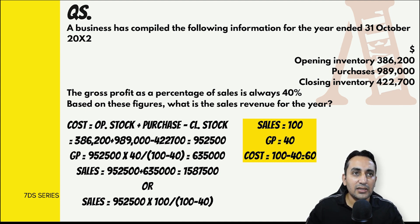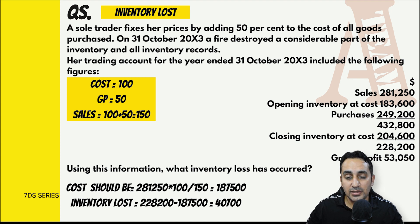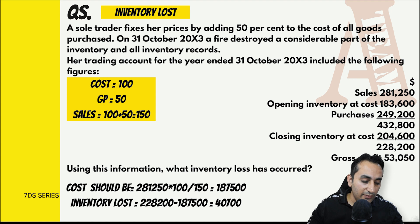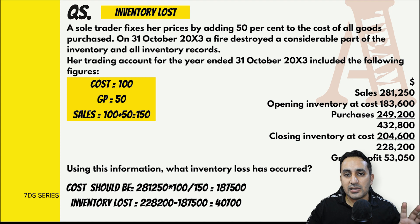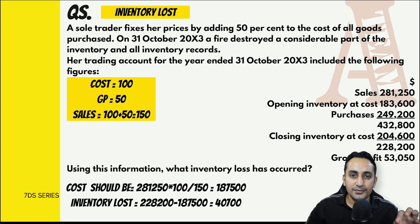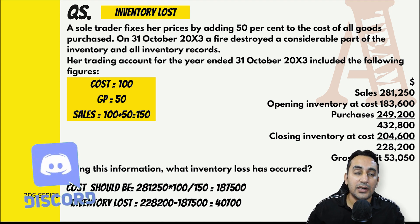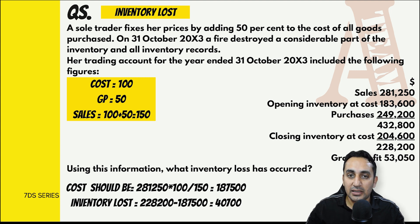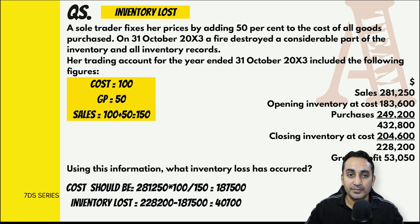अगले question में 31st October X3 को आग लगी है और inventory destroy हुई है - inventory lost कितनी हुई यह निकालना है। Inventory lost होने के बाद trading account से information निकाल कर दी है जिसमें sales, cost of goods sold और gross profit 53,050 है। आग लगने के बाद यह बनाया गया है, यानी जो माल बेचा वो 100 + 50 पर बेचा गया है।